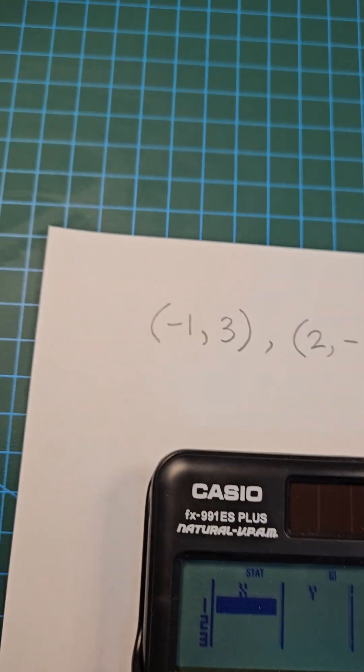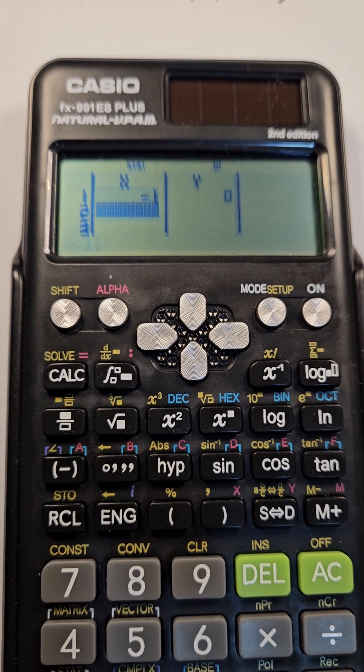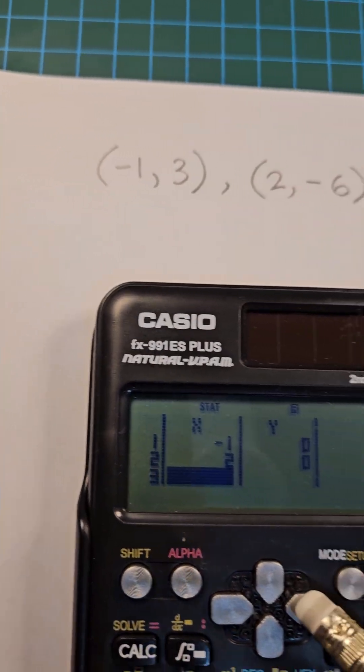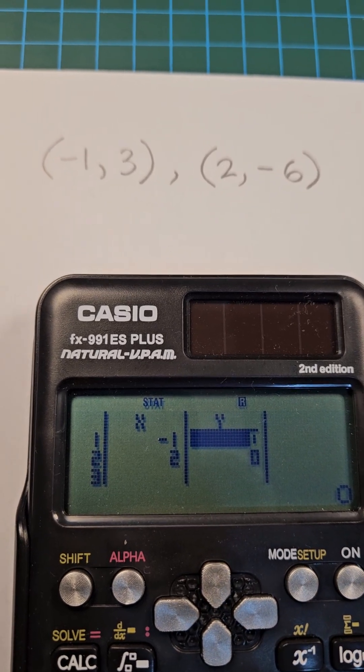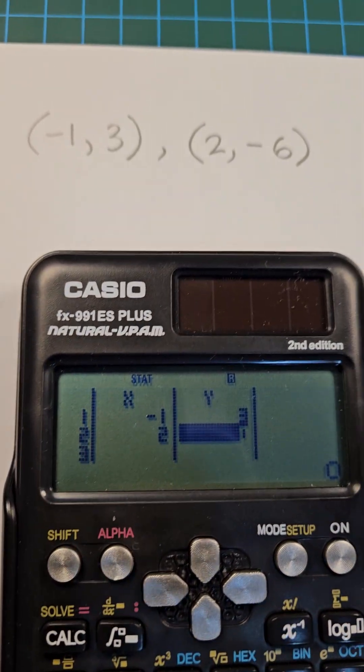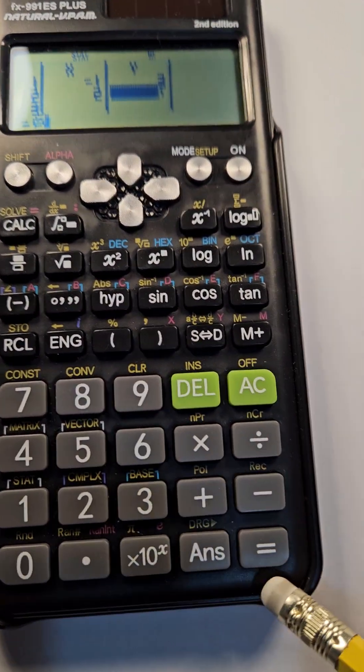I'm going to enter the x coordinates first in the x column, so -1, then enter, then 2, then enter. Then going across to the y column, I'll enter the corresponding y values: 3, then enter or equals, then -6, then equals.